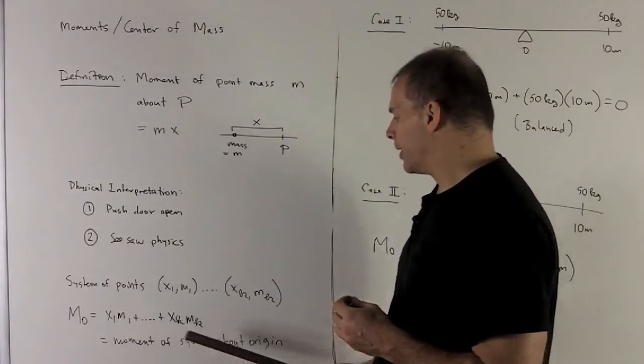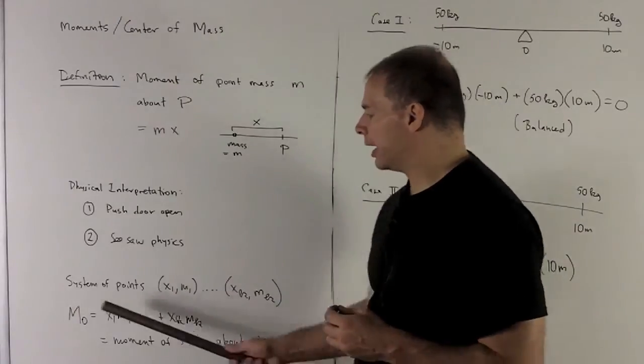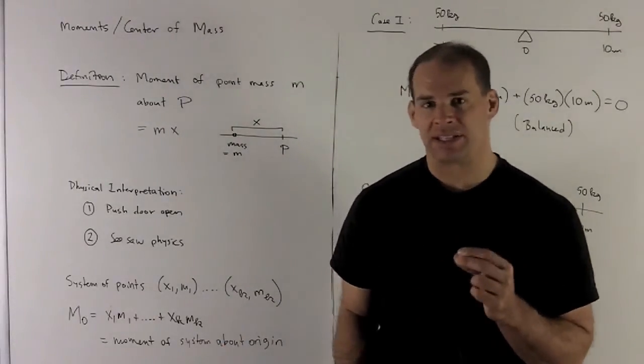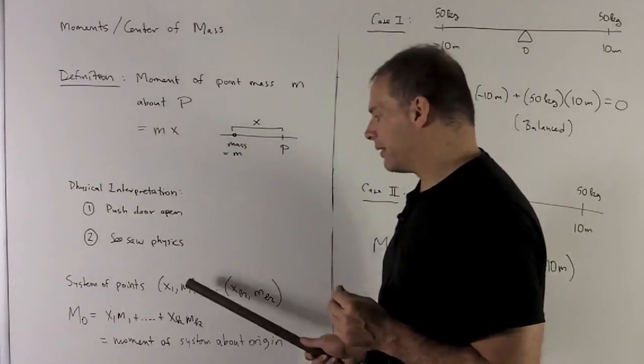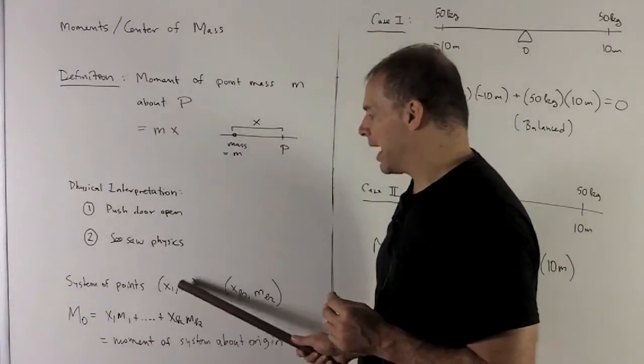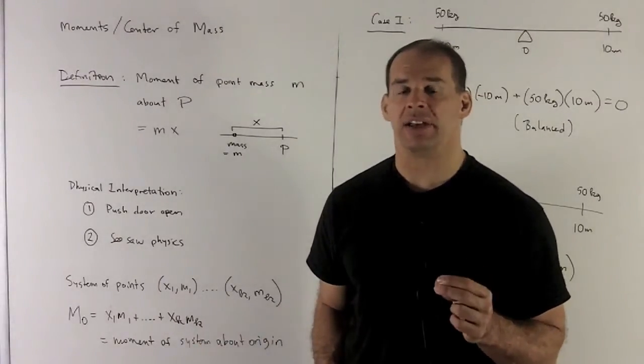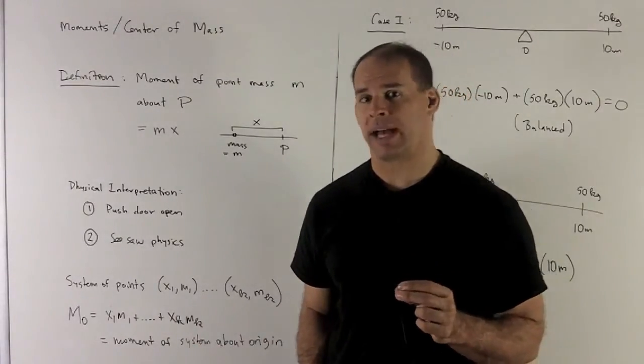So that's what I'm going to call the moment of the system about the origin, M0. Now the thing to note is that when I talk about distance here, if x1 happens to be a negative number on the left of the origin, it's still going to keep its minus sign. So when we talk about distance, we're talking about signed distance.